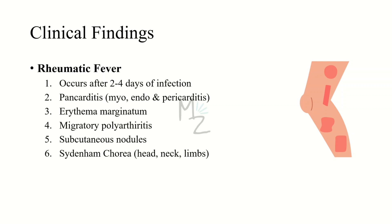Rheumatic fever also causes erythema marginatum — a skin rash that spreads from the trunk to the limbs — as well as migratory polyarthritis and subcutaneous nodules visible on hands. One important condition is Sydenham's chorea, which involves jerky, uncontrollable, and purposeless movements of the hands, arms, shoulders, face, legs, and trunk. It is believed that the infection also affects certain ganglia in the brain, causing this condition.